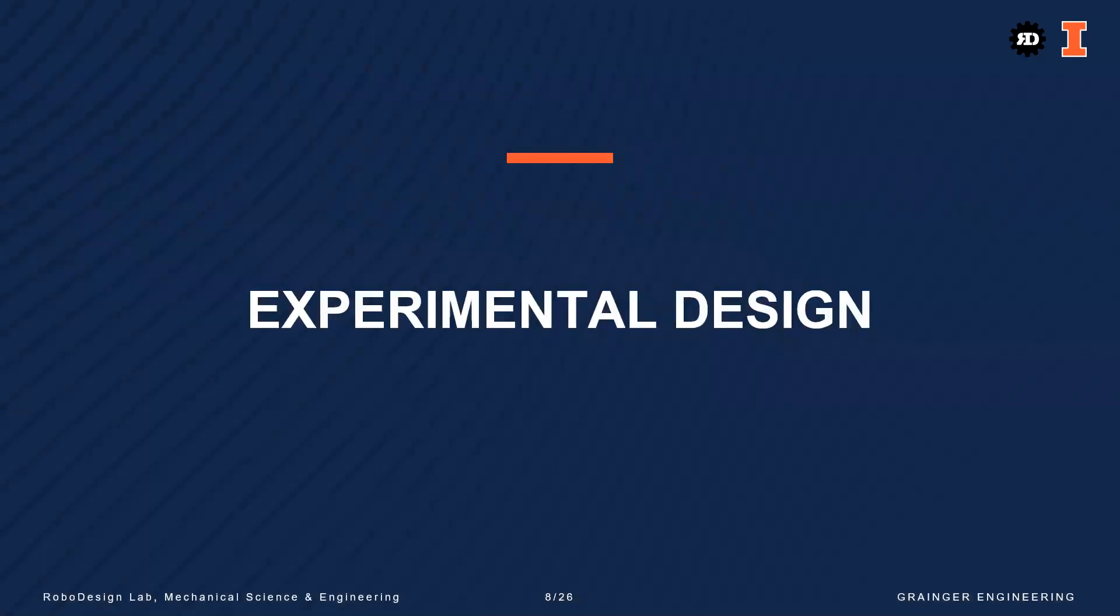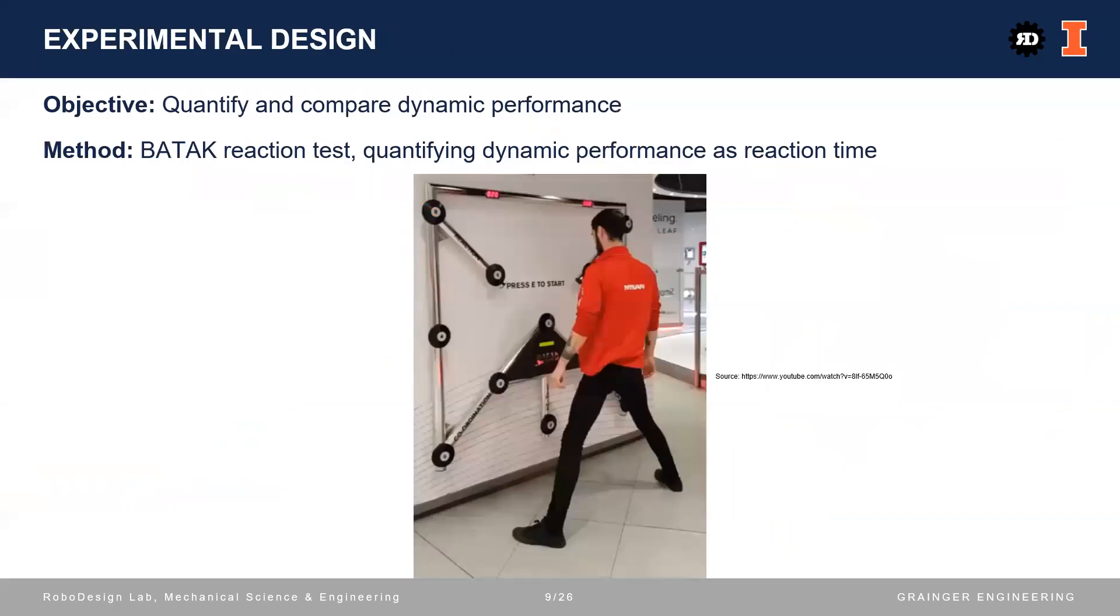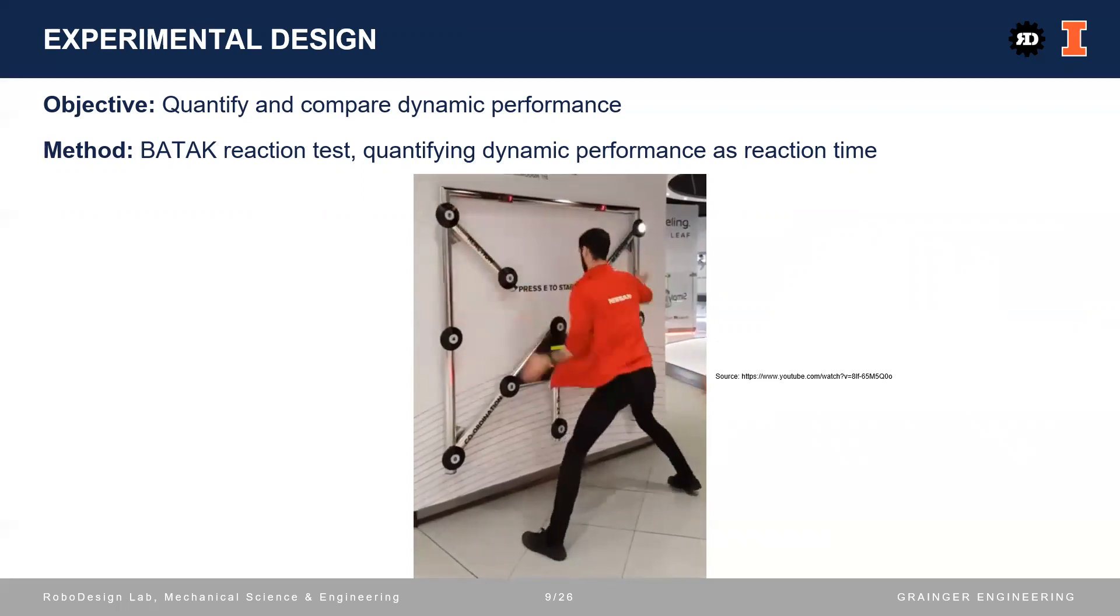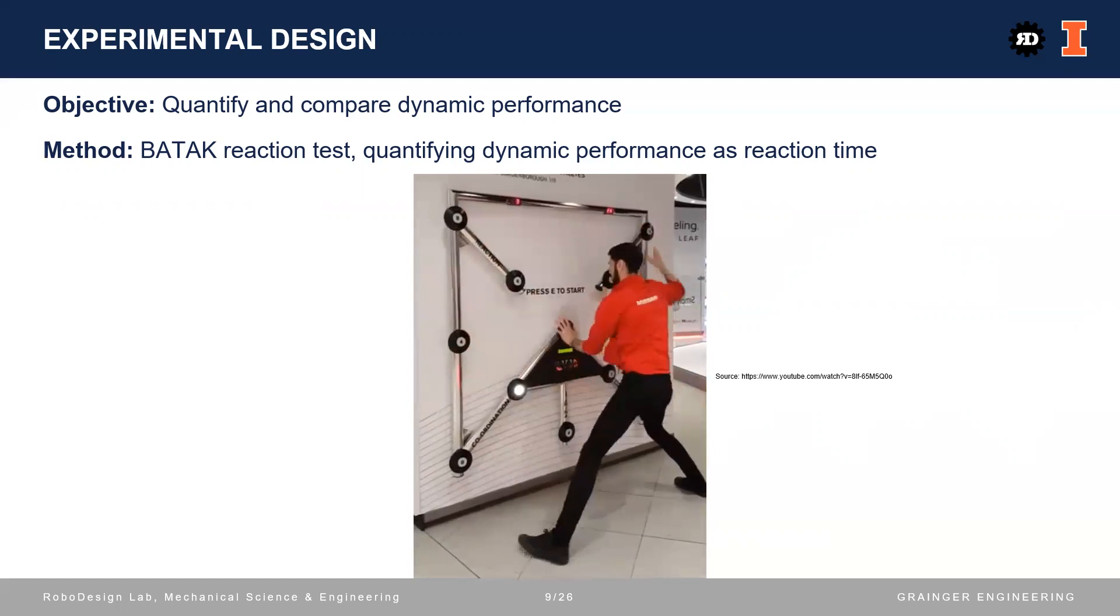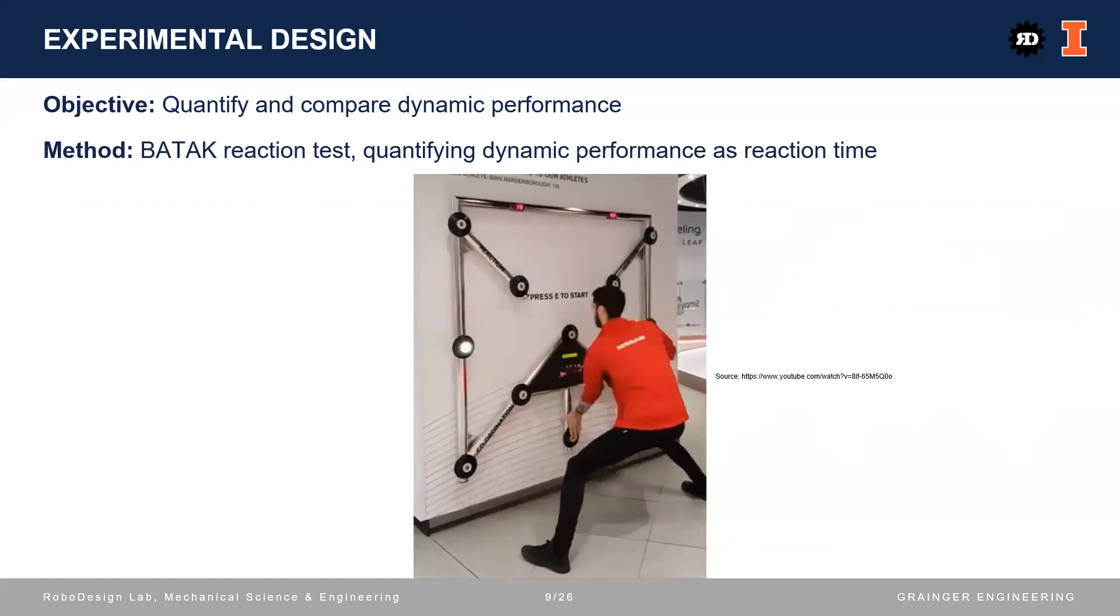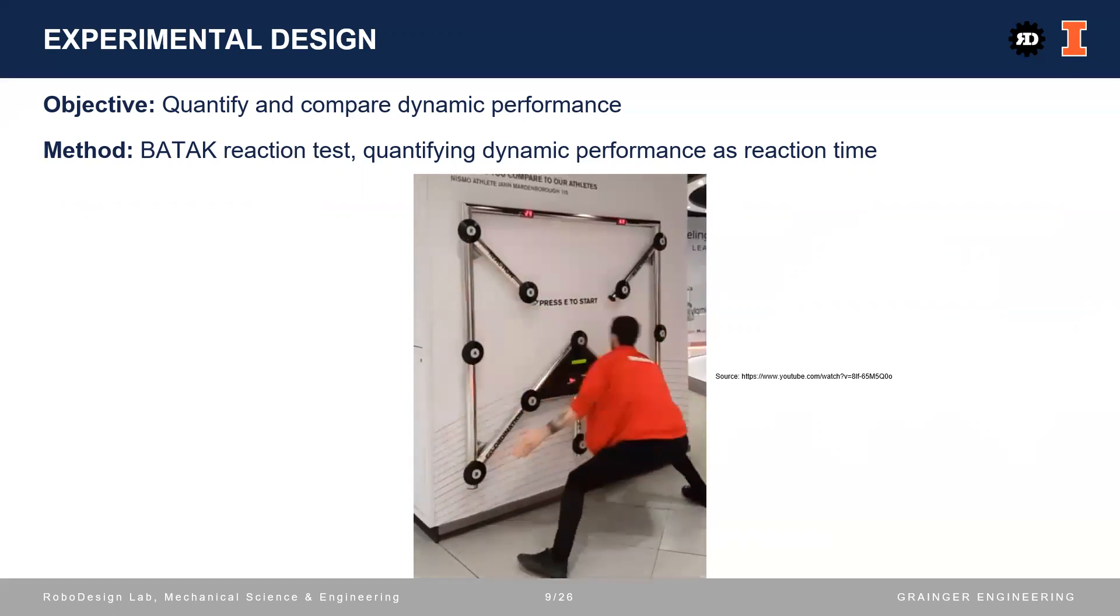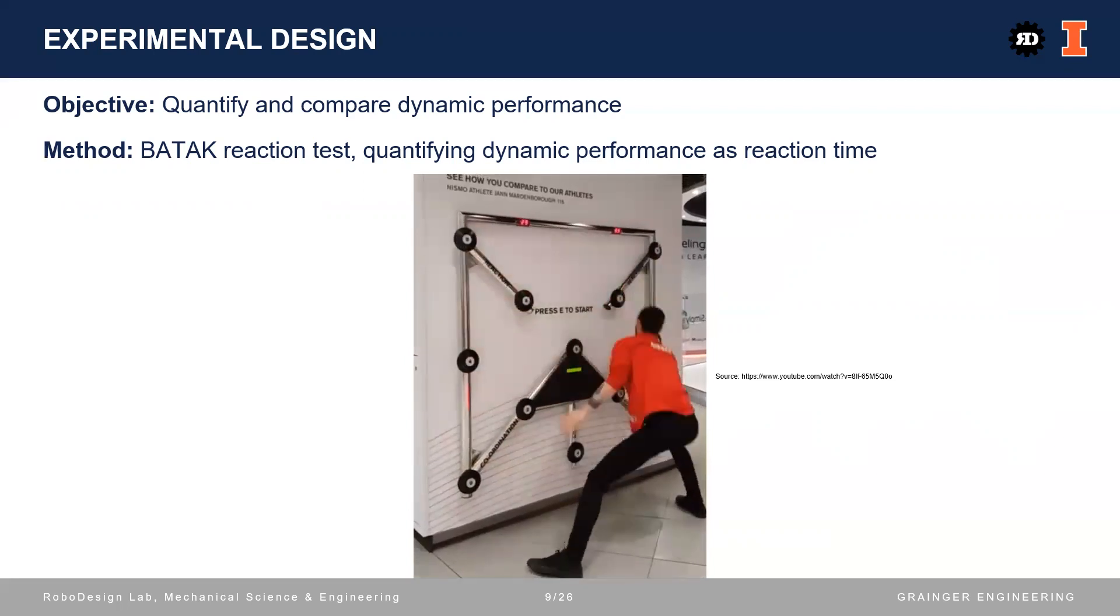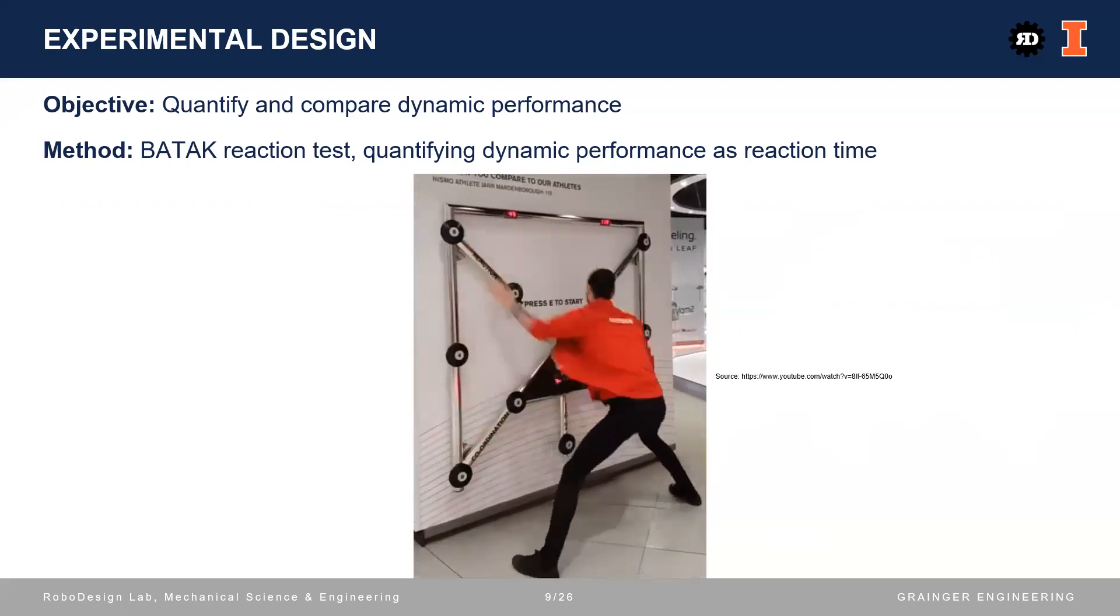Now we will look at experimental design. The experiment's objective is to quantify and compare the teleoperation system's dynamic performances under different conditions. The method we chose was the Batak test, which quantifies dynamic performance as reaction time. The Batak test is a standard reaction test in a wide spectrum of sports, especially in motor racing. Since the teleoperation system also contains a human and a machine, we thought that the Batak test would be appropriate.